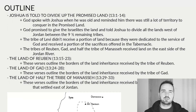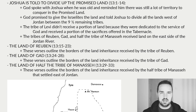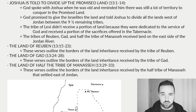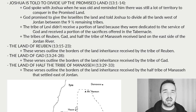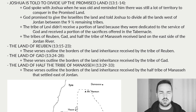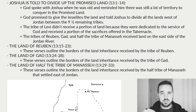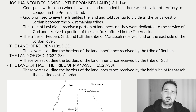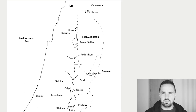That brings us to our last three outline sections. Verses 15 through 23 cover the land given to the tribe of Reuben. Verses 24 through 28 cover the land given to the tribe of Gad. And verses 29 through 33 cover the land given to the half tribe of Manasseh that settled on the east side of the Jordan River. If you go through and read the chapter, you'll notice there are a lot of names and landmarks mentioned for the borders of these regions and how the land was supposed to be divided up.